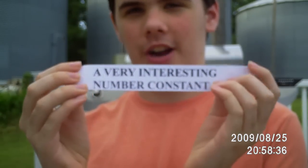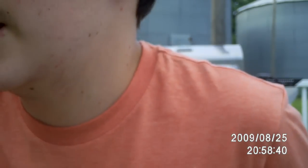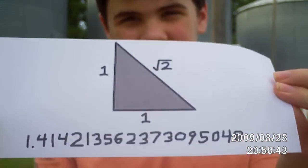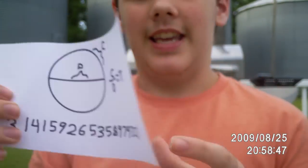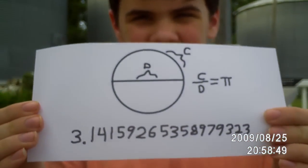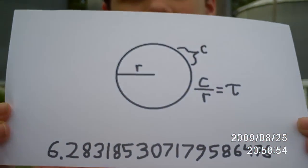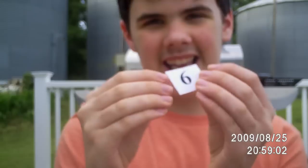Hello everybody. I'm going to show you about a very interesting number constant, very cool for geometry. And no, it isn't the square root of 2, it's not pi, definitely it is not tau. But instead, it's a very easy number to memorize, because it is 6.